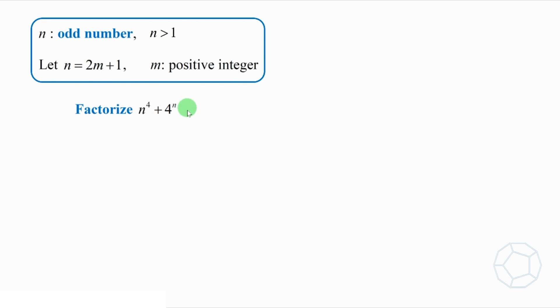How to do it? We break down 4 to the power n into 4 times 4 to the power of n minus 1. Then, we write this 4 as 2 squared. At the same time, let's put n equals 2m plus 1 into the index. Simplified, we get 4 times 2 squared, the whole thing to the power of 2m.